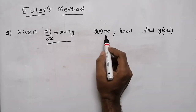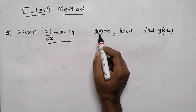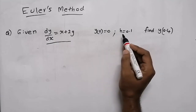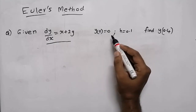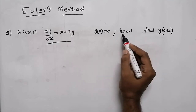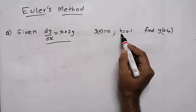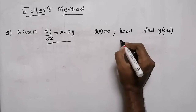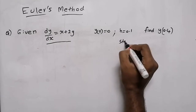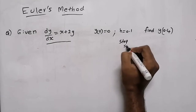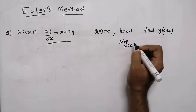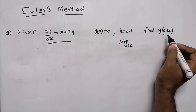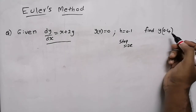Given that y(0) equals 0 — that is the initial condition — and h equals 0.1. h is known as the step size. They are asking us to find y(0.4).